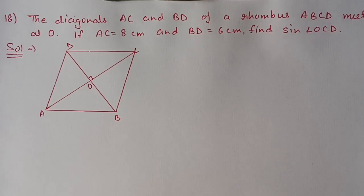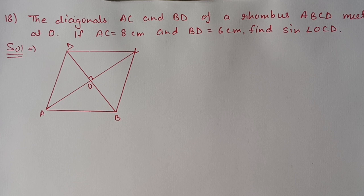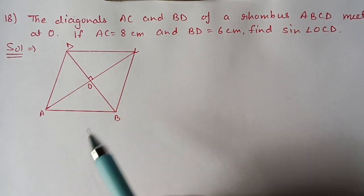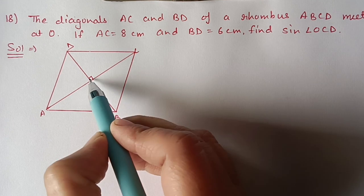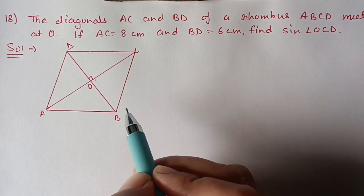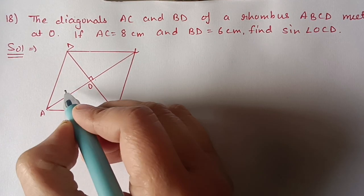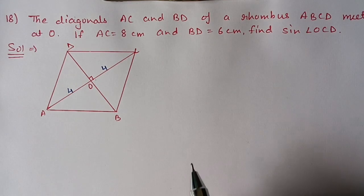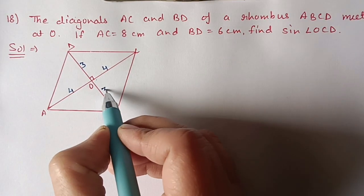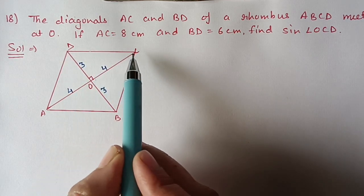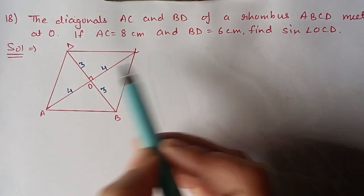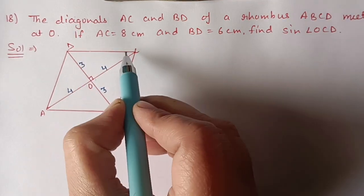Next, question number 18. The diagonals AC and BD of a rhombus ABCD meet at O. If AC = 8 and BD = 6 cm, find sin(∠OCD). We draw the figure: ABCD is a rhombus; both diagonals bisect each other, and diagonals of a rhombus bisect each other at 90°. AC = 8 means each half is 4; BD = 6 means each half is 3. We need to find side CD and then angle OCD.